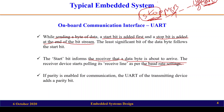Parity is needed for error detection. When transmitting data through a channel, errors may occur — for example, a '1' in the bit stream may be received as '0' on the receiver side. To verify that data has been transmitted without errors, a parity bit is used. The transmitter can use even or odd parity, and the same must be used on the receiver side for error checking.